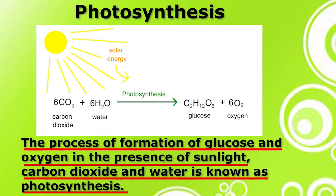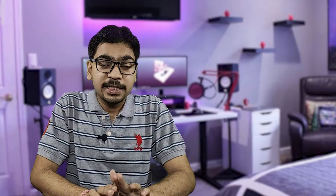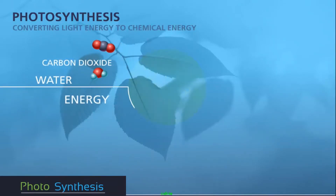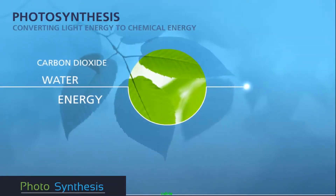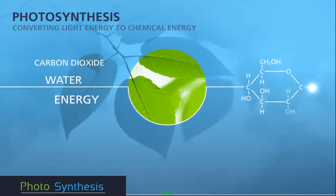The glucose produced through photosynthesis is utilized by the plants, and the oxygen molecules are released into the atmosphere, which we — human beings and animals — inhale. Photosynthesis involves the conversion of light energy into chemical energy, and the photosynthetic apparatus plays a vital role in this conversion.